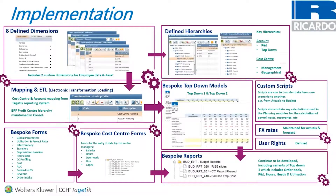Within TGETIC, there are core dimensions of FX, the scenarios — so that can be actuals, budget, and forecast — and they are quite customizable. All of these things are customizable: the period and also the entity, the entity being the division for Ricardo or different cost centers. We were fairly flexible in how we structured that, and we went through a standard process for defining these requirements.